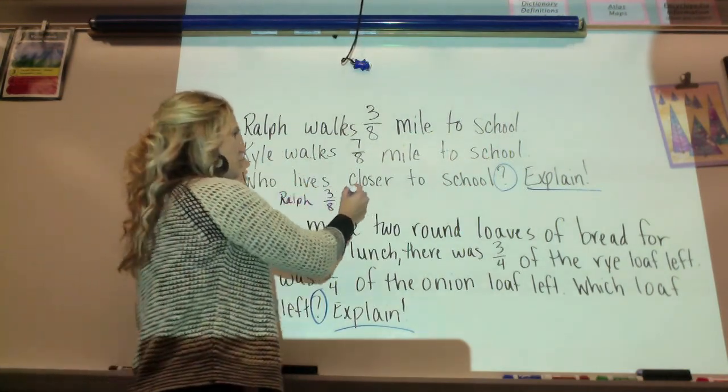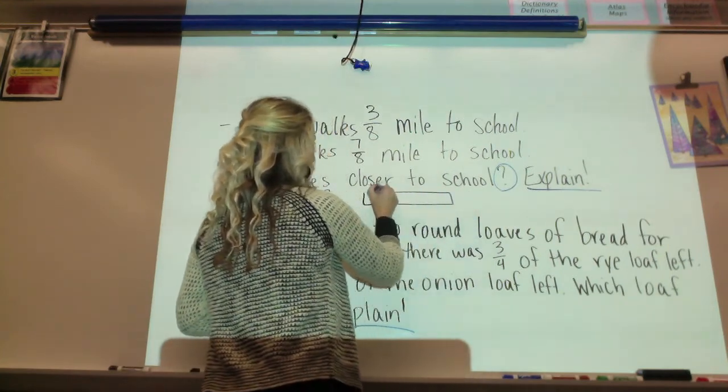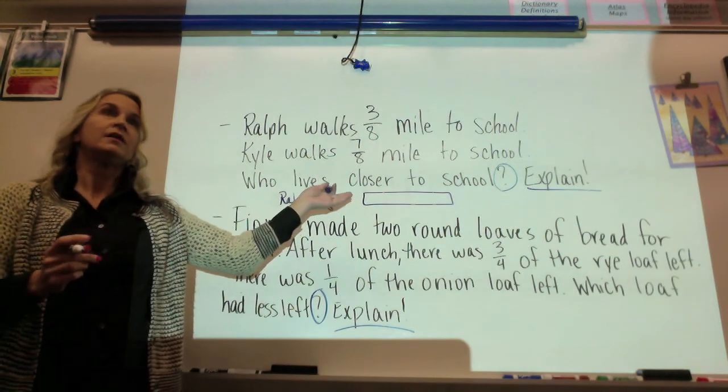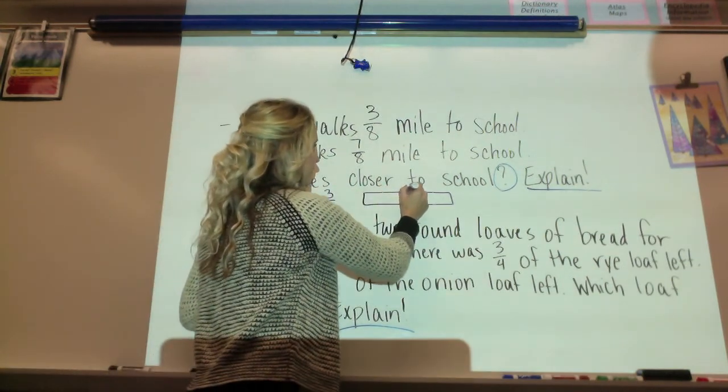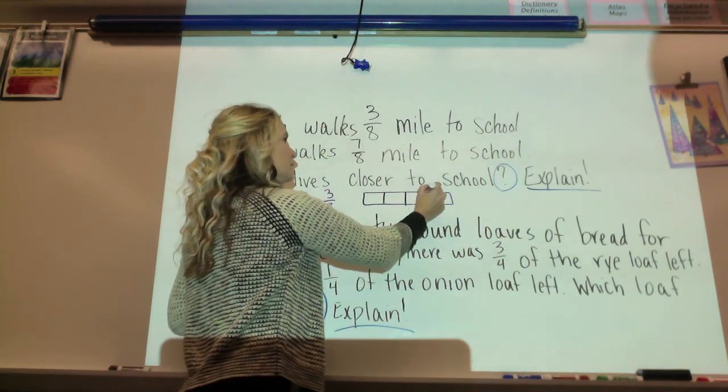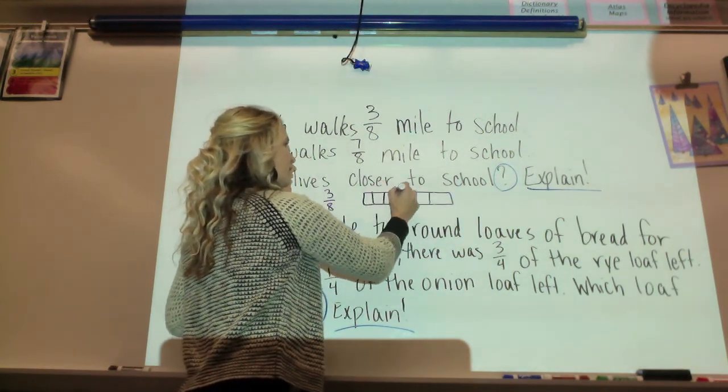If I'm not sure what that looks like, I can make myself a little, here's the street, and take this mile and divide it into eighths. That's half. That's fourths and then divide all those should be eighths.